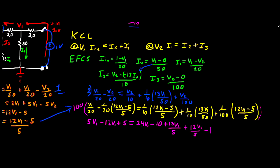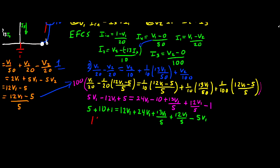Now let's move all the constants to one side and V1s to the other, and we'll have 5 plus 10 plus 1 is equal to 12V1 plus 24V1 plus 13V1 over 5 plus 12V1 over 5 minus 5V1. And this is going to come out to 16 is equal to 36V1, and that gives us V1 is equal to 16 over 36, and that is 4 divided by 9.